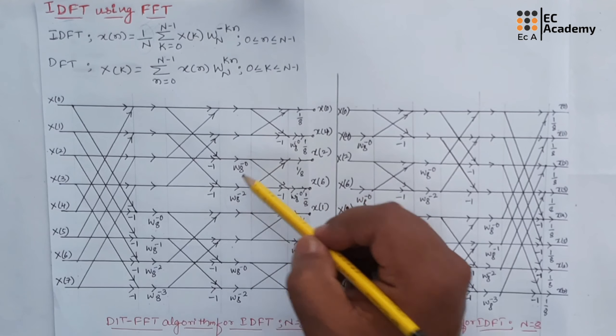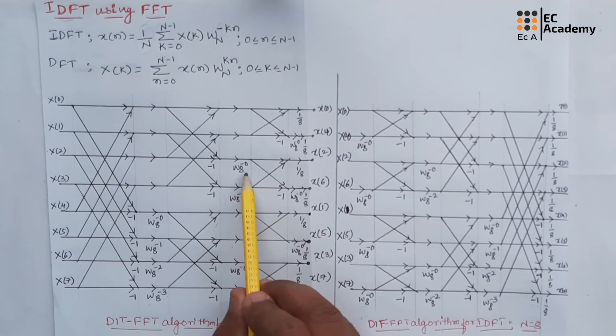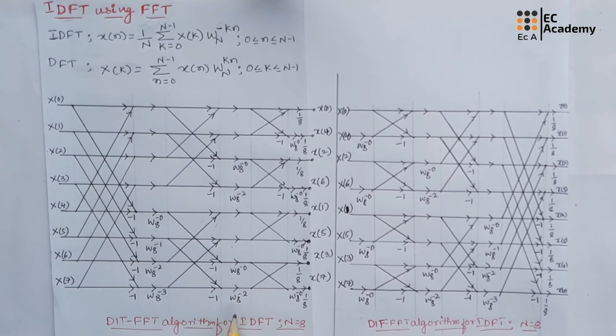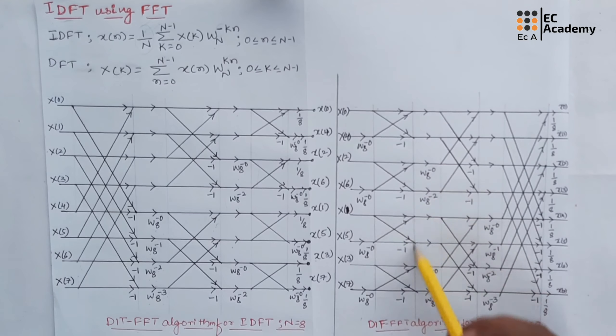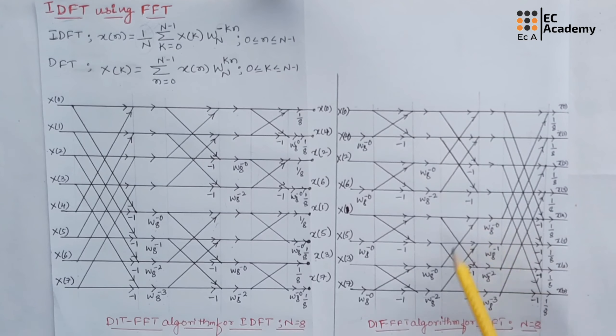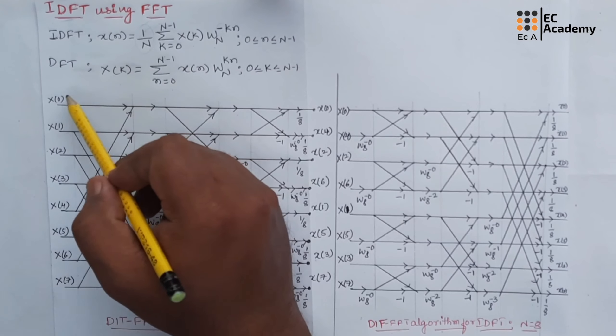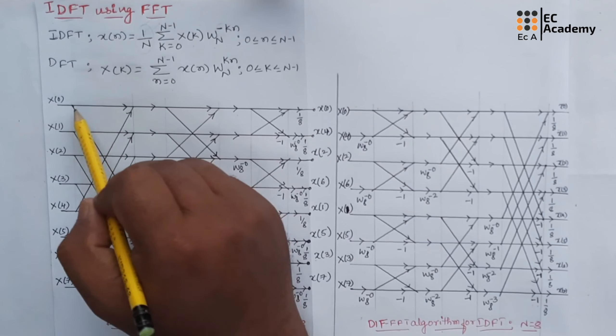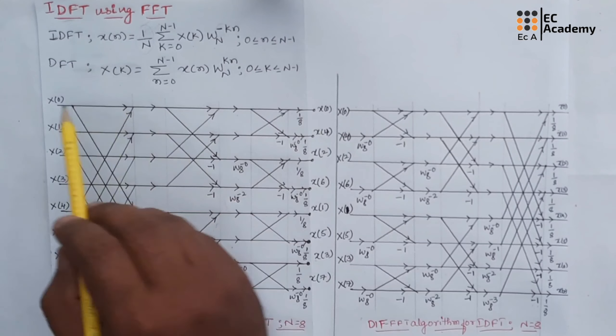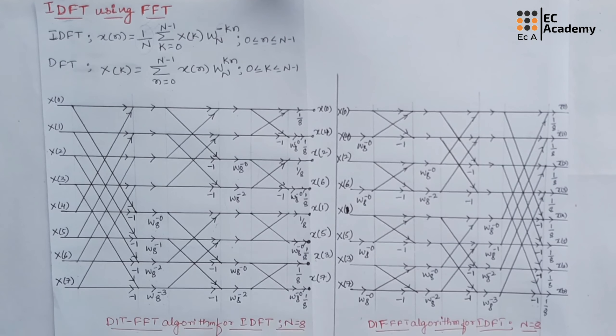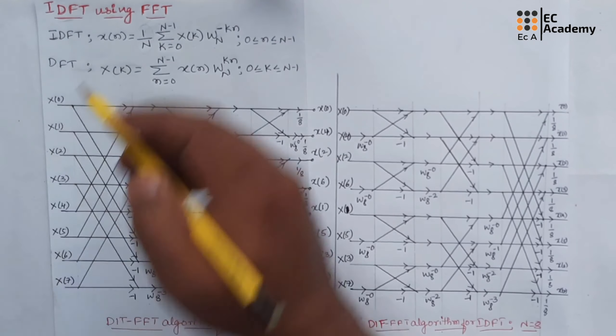So similarly here we will write W_8^(-0) and W_8^(-2), and also here we will change the sign of twiddle factor. And the next change is we need to replace x(n) and x(k), so the position of x(n) and x(k) should be changed in both DIT-FFT as well as DIF-FFT.